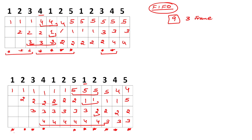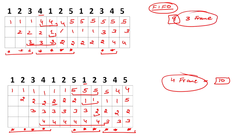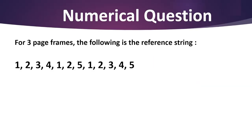For value 5, we replace accordingly — one more page fault. So when we increase the number of page frames from three to four, the page faults increase from nine to ten. This demonstrates Belady's anomaly: increasing page frames actually increased page faults in the FIFO algorithm.